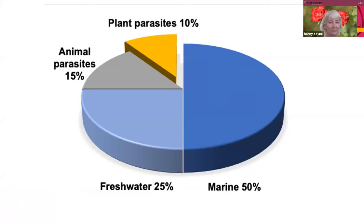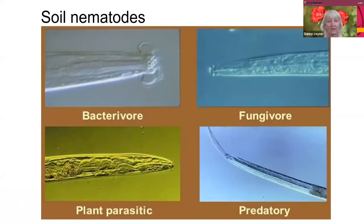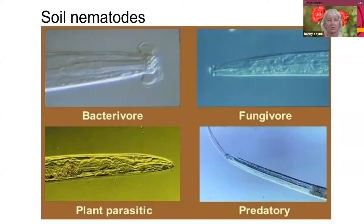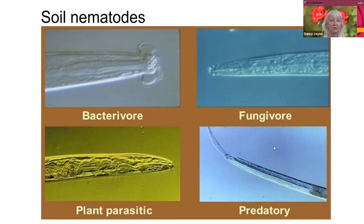We have some animal parasites that Danny kindly shared with us. And then finally we have the plant parasites, which are only 10% of the proportion, but yet they are very important. When talking about soil nematodes today in terms of plant parasitic nematodes, we have plant parasitic nematodes, predatory nematodes, fungal feeders, and bacterial feeders.